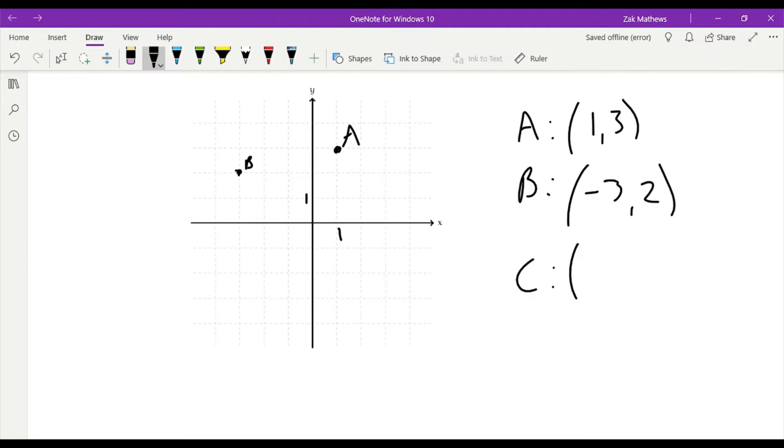Let's take C to be zero, negative three. So zero is my x, that's telling me I don't move left or right at all. But I do need to move down by three. One, two, three. And that's my point right there.